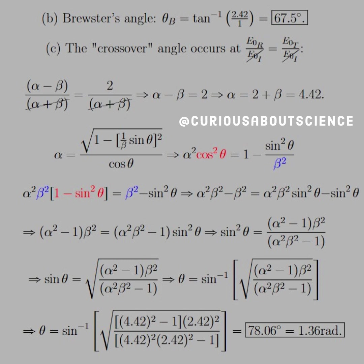The crossover angle occurs when R equals T. If we set these ratios equal to one another, the incident cancels out, and the denominators don't matter — so what we see is that alpha minus beta equals 2, and therefore alpha equals 2 plus beta, which equals 4.42. Substituting into the alpha equation, we see that alpha squared cosine squared equals 1 minus sine squared times beta squared. We're just solving for the angle, and we write everything in terms of sine squared after substituting in the Pythagorean identity.